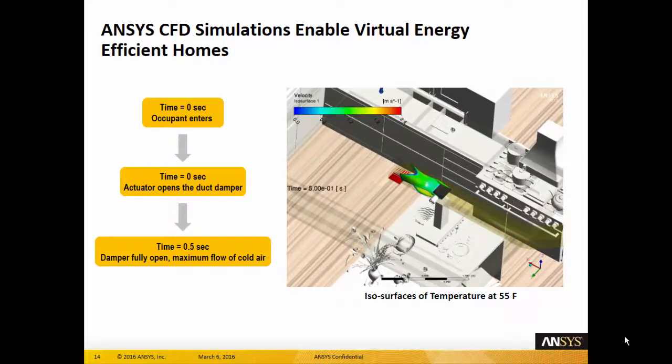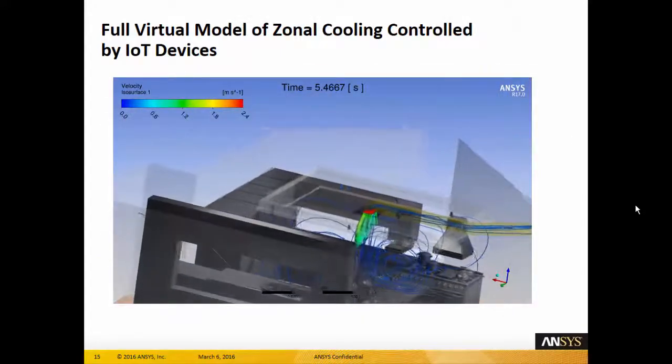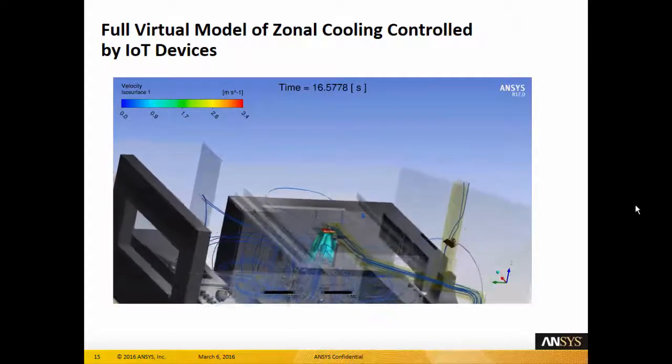The duct only opens when the antenna in the actuator receives the opening signal from the control unit. The flow and temperature distribution can then be tracked at any location at any time after the opening of the HVAC damper in the kitchen.